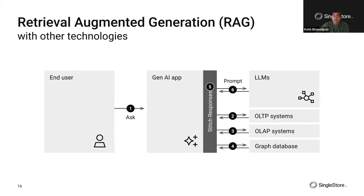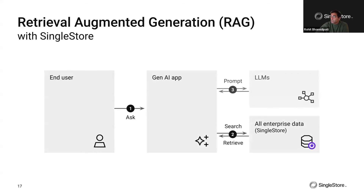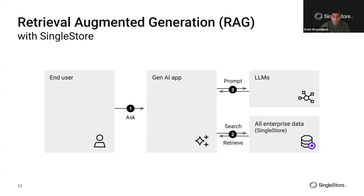Now let's look at what happens when you build this type of application with SingleStore. With SingleStore, you have your end user asking a question, and with a single query you can search and retrieve all the contextual information from your knowledge graph — because all the information needed for your LLM context is present in the SingleStore database. All this context is sent to the LLM and responses are sent back to the user.